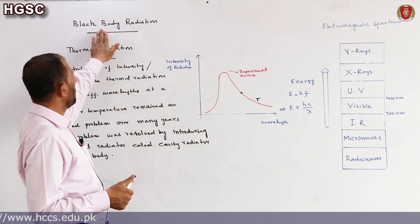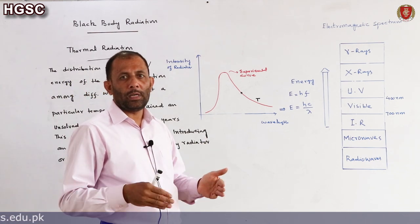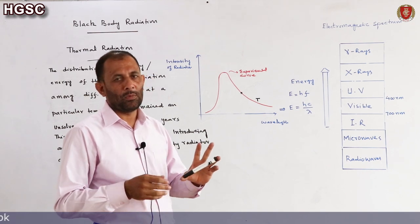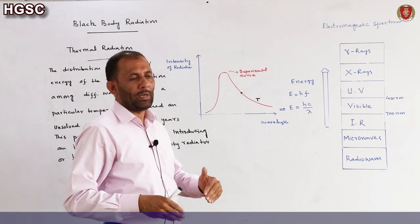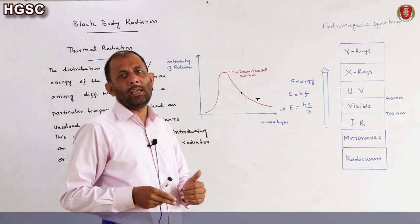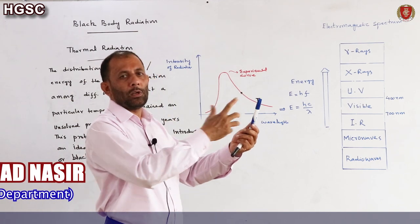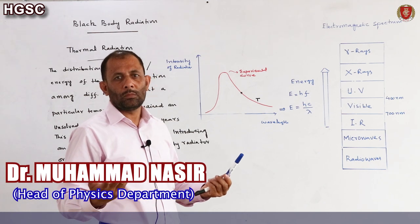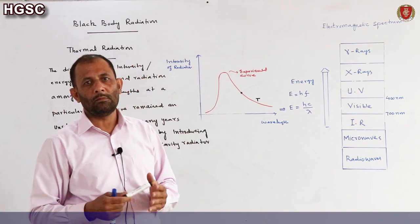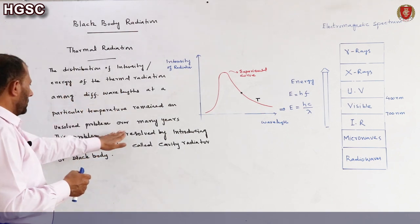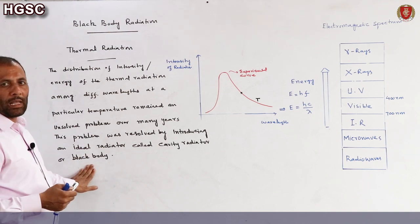Now, coming to the point of black body radiation: all bodies emit radiation because of temperature — known as thermal radiation — of different wavelengths with different intensities. Different bodies at the same temperature emit radiation of different wavelengths. Therefore, the problem was resolved by introducing an ideal radiator — the cavity radiator — which is known as the black body.